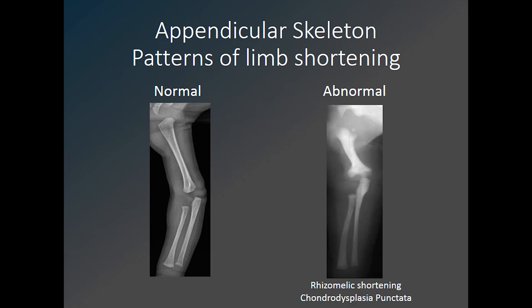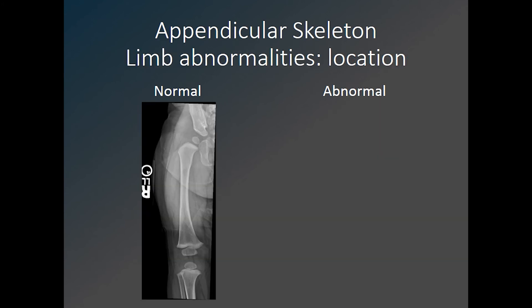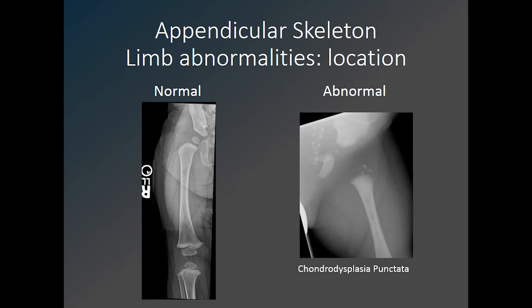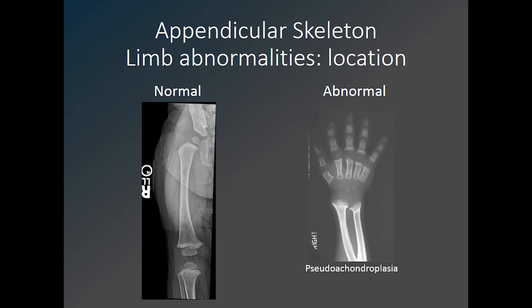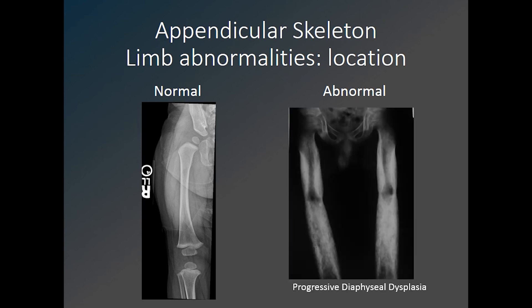Here is an example of rhizomelic shortening in this child with chondrodysplasia punctata. The humerus, or the proximal segment, is very shortened compared to the more distal segments. Within any given long bone, we want to take a careful look at the growing ends of the bones. In this child with chondrodysplasia punctata, we see stippling, or multiple tiny punctate dots, in place of the normal epiphyses. Here is an example of a metaphyseal abnormality. This patient has pseudoachondroplasia, with widening and flaring of the metaphyses of the distal radius and ulna as well as in the hand. And here is a patient with a diaphyseal abnormality — marked cortical thickening in the diaphysis of this patient with progressive diaphyseal dysplasia.